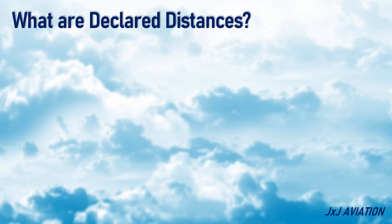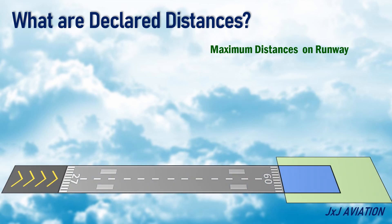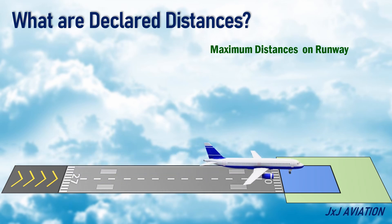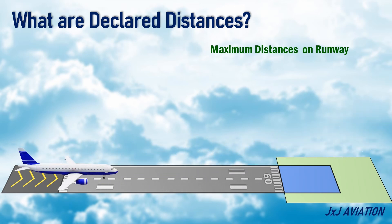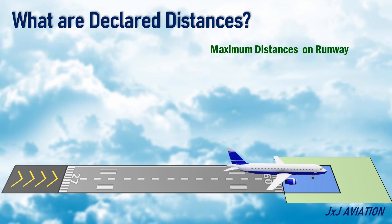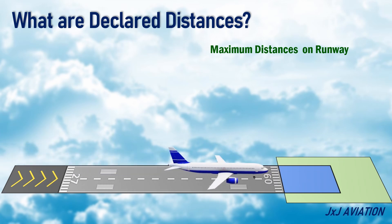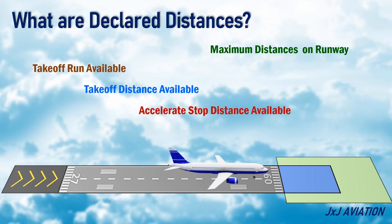What is meant by declared distances? The declared distances are the maximum distances available for aircraft operations on a runway. These distances should be suitable for an airplane's takeoff run, takeoff, reject takeoff, and landing distance requirements. The declared distances include takeoff run available, takeoff distance available, accelerate stop distance available, and landing distance available.